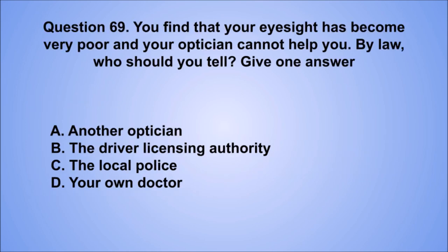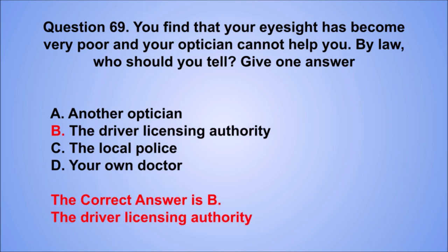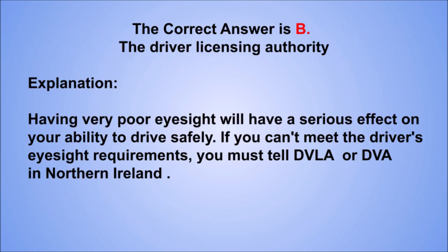Question 69. You find that your eyesight has become very poor and your optician cannot help you. By law, who should you tell? Give one answer. A. Another optician. B. The driver licensing authority. C. The local police. D. Your own doctor. The correct answer is B, the driver licensing authority. Having very poor eyesight will have a serious effect on your ability to drive safely. If you can't meet the driver's eyesight requirements, you must tell DVLA or DVA in Northern Ireland.